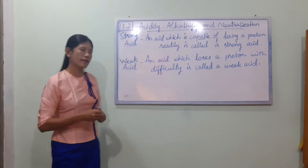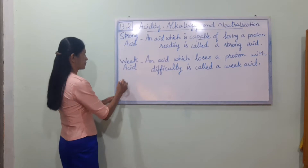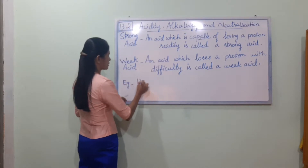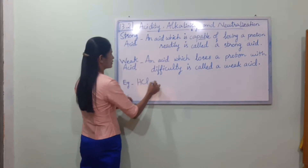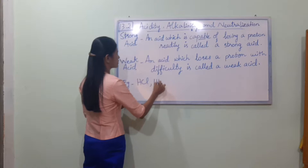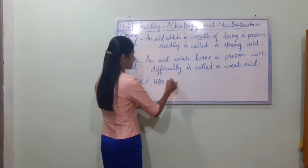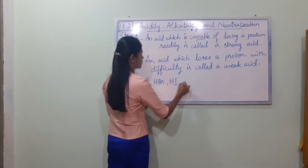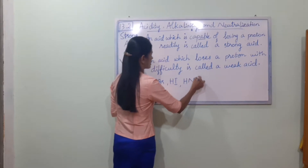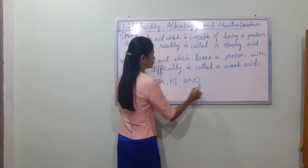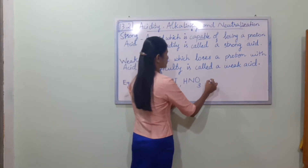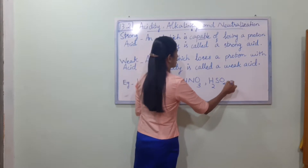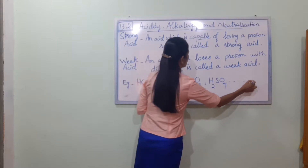Examples of strong acids: HCl (hydrochloric acid), HBr, HI, HNO3 (nitric acid), H2SO4 (sulfuric acid), and H3PO4.